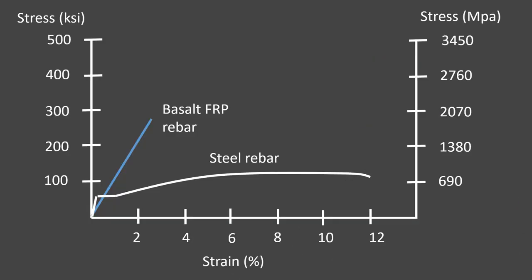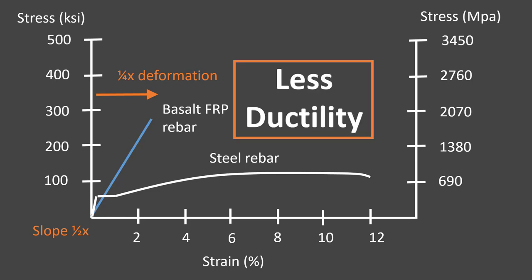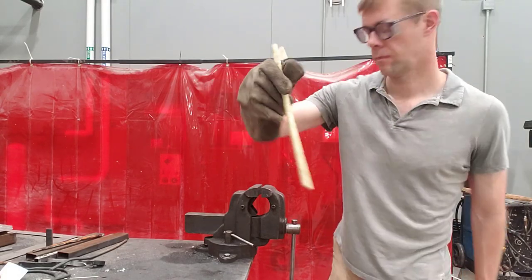Now if I show a basalt rebar here in blue, notice this slope in the stress strain diagram is very different than it is for a steel rebar. The slope at the beginning, that very initial slope is about half of what a steel rebar is. Also, the total deformation of the bar is about one fourth of a steel rebar. Again, this can be a big deal when it comes to ductility. This is a less ductile system.